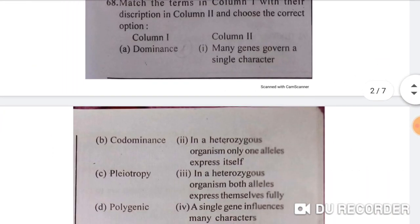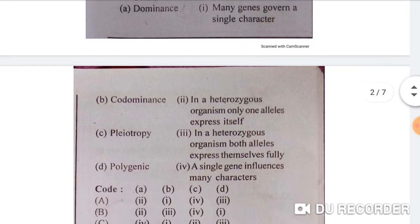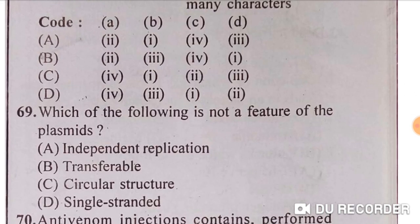Next: match the terms in column one with their descriptions in column two. Dominance — in a heterozygous organism only one allele expresses itself. Co-dominance — in a heterozygous organism both alleles express themselves fully. Pleiotropy — a single gene influences many characters. Polygenic inheritance — many genes govern a single character. So the correct matching gives option B as the correct answer.